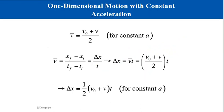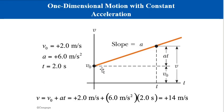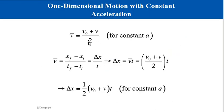When velocity is increasing or decreasing at a uniform rate, we can find the average velocity to be halfway between the initial and final velocity. Looking at the area under the graph, the triangle represents the additional displacement when the object is accelerating. The average velocity equals the initial velocity plus the final velocity divided by 2. Note that this equation applies only to constant or uniform acceleration — the terms mean the same thing.